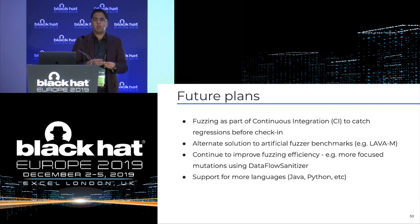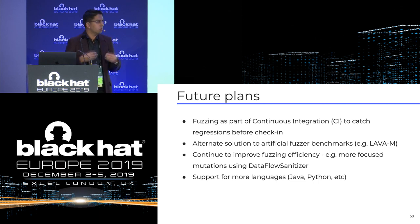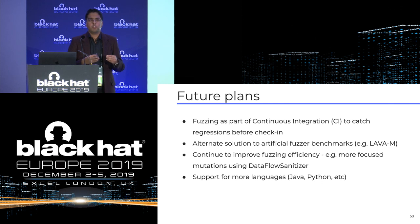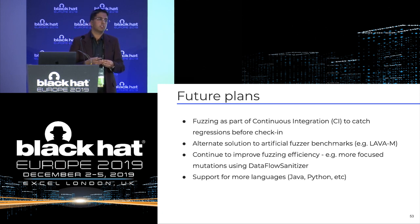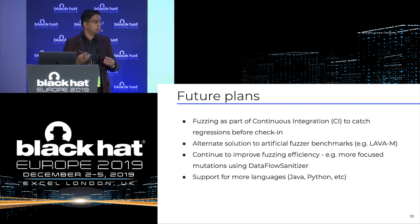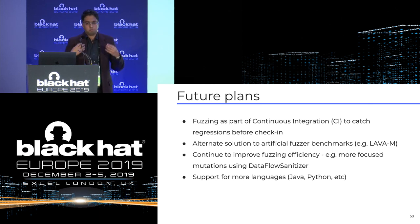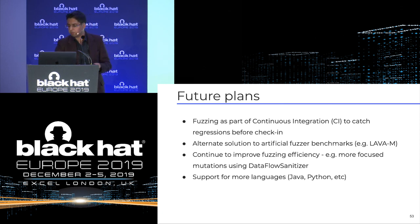We want to continue improving our fuzzing efficiency and leverage more sanitizers. There's a new one called DataFlowSanitizer that can guide you towards which input bytes will give better results when mutated. Finally, we want to support more languages. We've focused a lot on memory-unsafe languages like C and C++ and have support for Go and Rust in our infrastructure, but we want to add support for more languages — it should be fairly simple, just a few more parsing signatures.